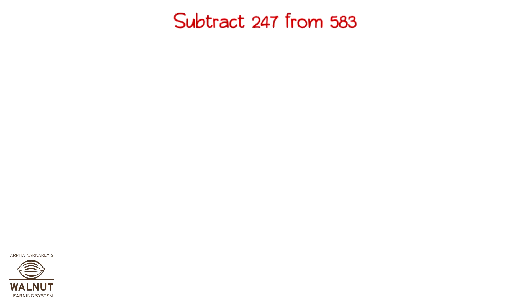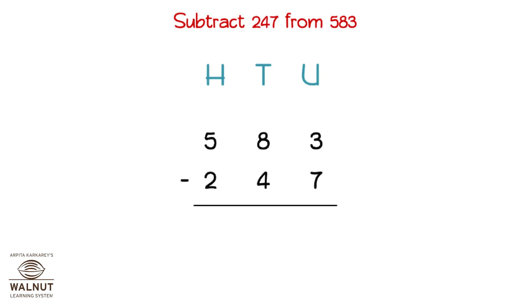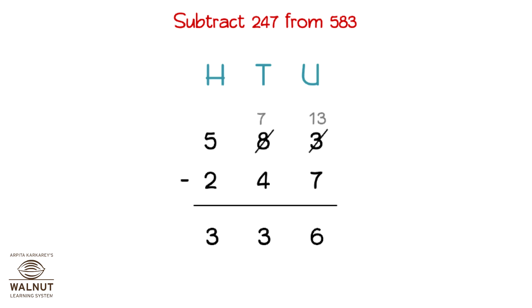Subtract 247 from 583. We write the numbers one below the other and write the place values. We look at the units place and have to borrow, then break a 10 and add it to the units. Then we subtract the units, subtract the tens, subtract the hundreds, and get the final answer: 336.